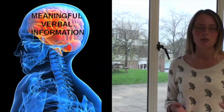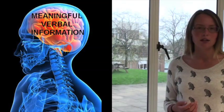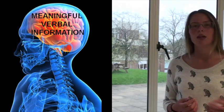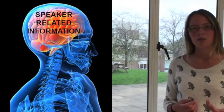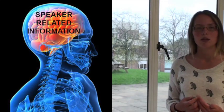When we hear speech, meaningful verbal information encoded in the phonemic variation of the signal is processed primarily in the left hemisphere of the brain in most people. In contrast, the speaker related information such as the emotional prosody is processed primarily in the right hemisphere.